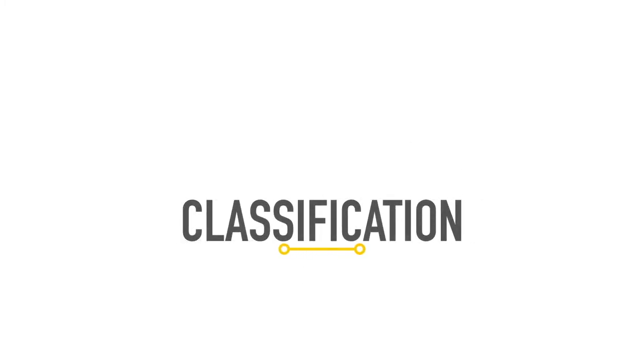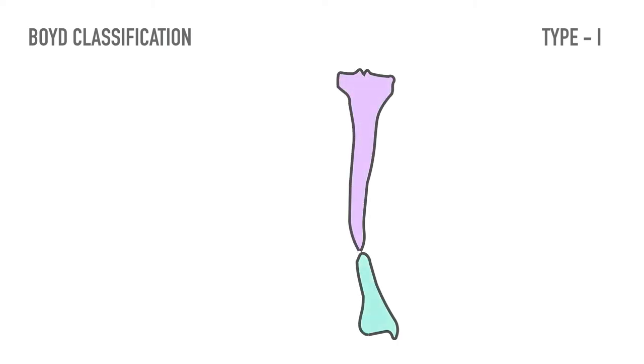Multiple classification systems have been created to describe congenital pseudoarthrosis of the tibia. The most commonly used is the Boyd classification, which divides congenital pseudoarthrosis of tibia into 6 types. In type 1, pseudoarthrosis occurs with anterior bowing and a defect in the tibia present at birth. Other congenital deformities may also be present.